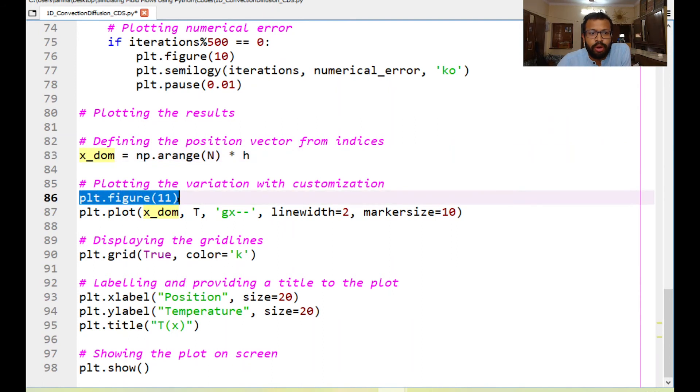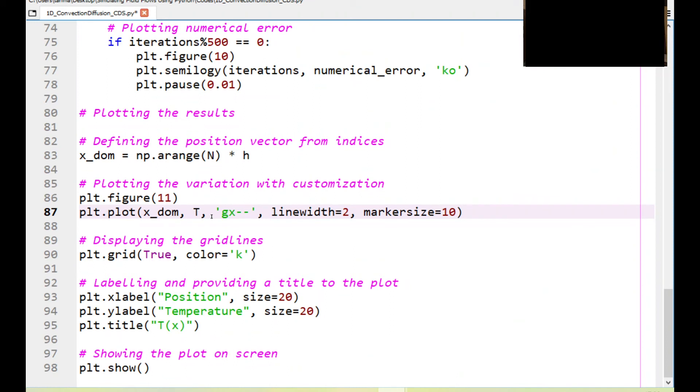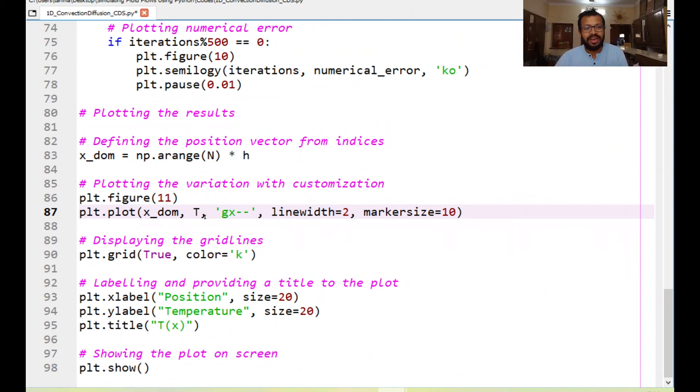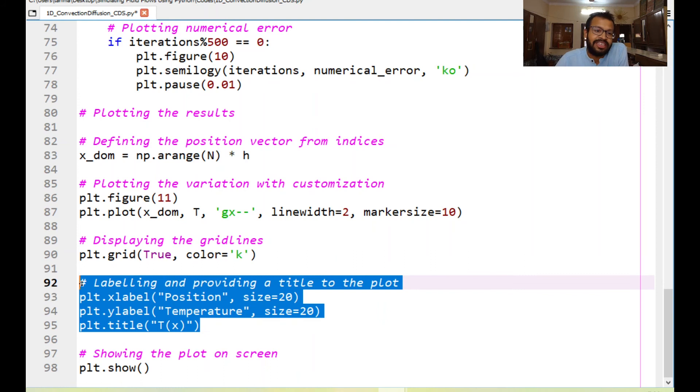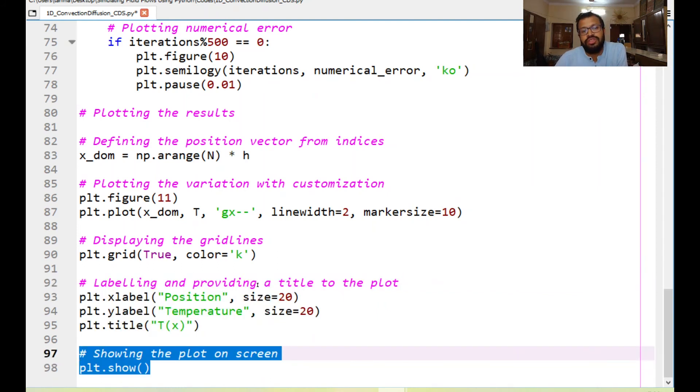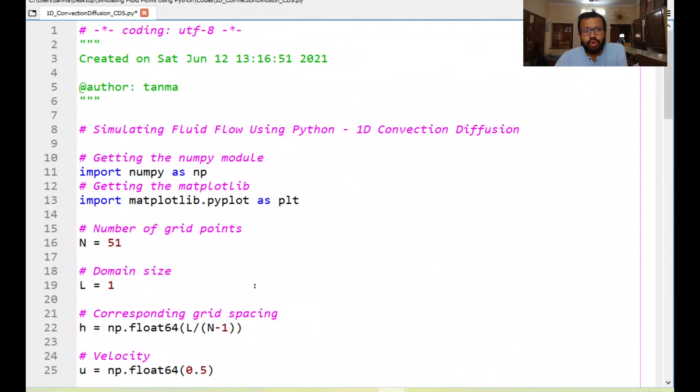Then our solution is being plotted in figure 11 that corresponds to x DOM being the x-axis the temperature being the y-axis the line width of the plot would be 2 pixels whereas the marker size would be 10 pixels. Then we would have a green line with cross symbols and a dashed line. This is something that you can modify based on your liking. After that we display the grid lines just so that the plot could look a little bit better. Then we do the labeling and provide a title to the plot and finally the plot is being shown on the screen. This is pretty much the code that we would be using here.